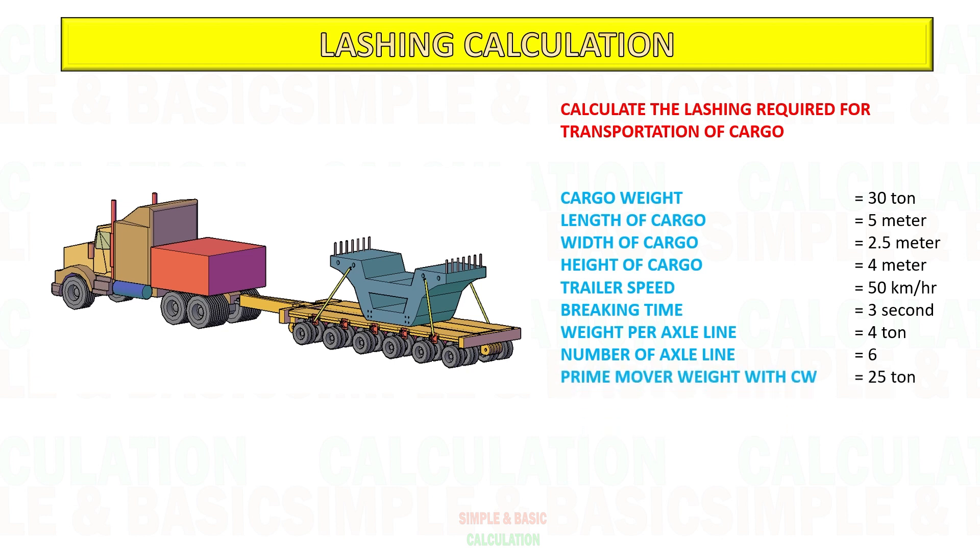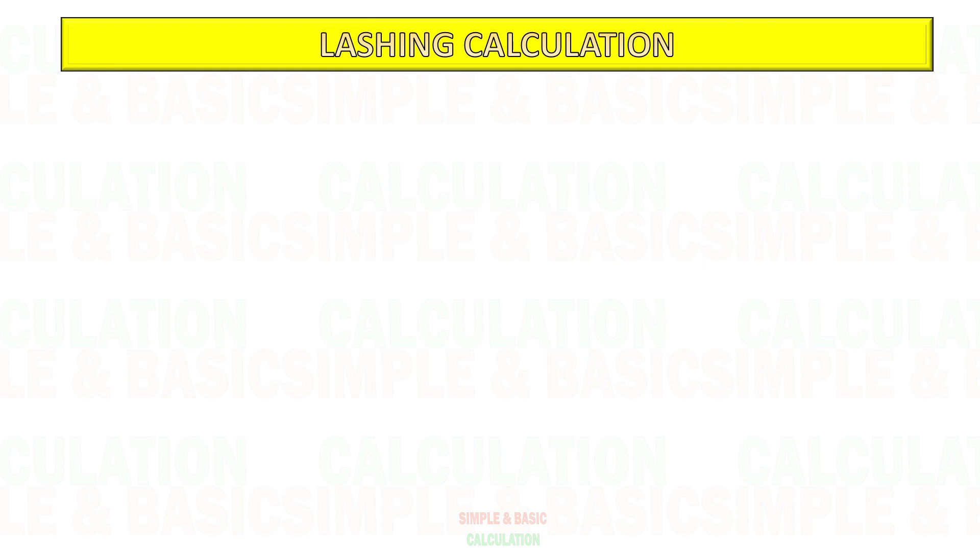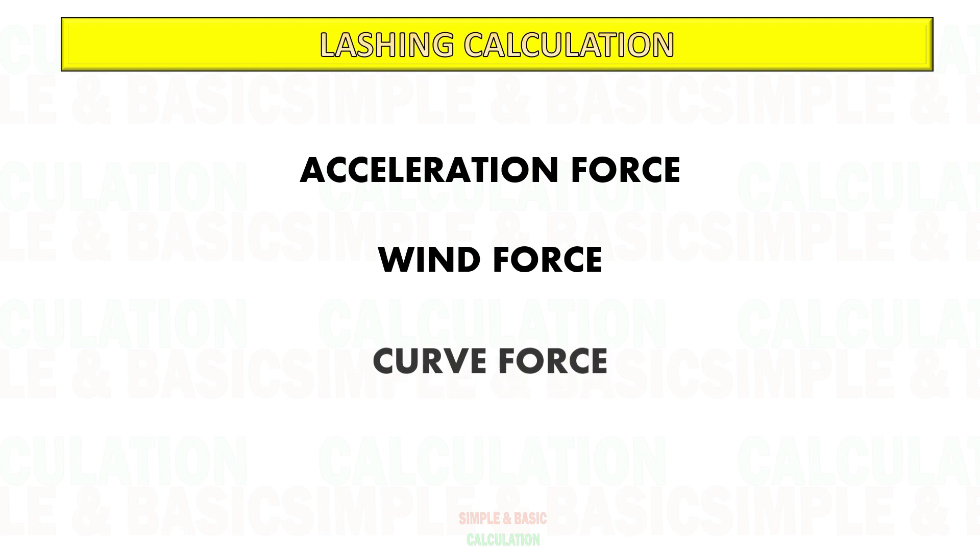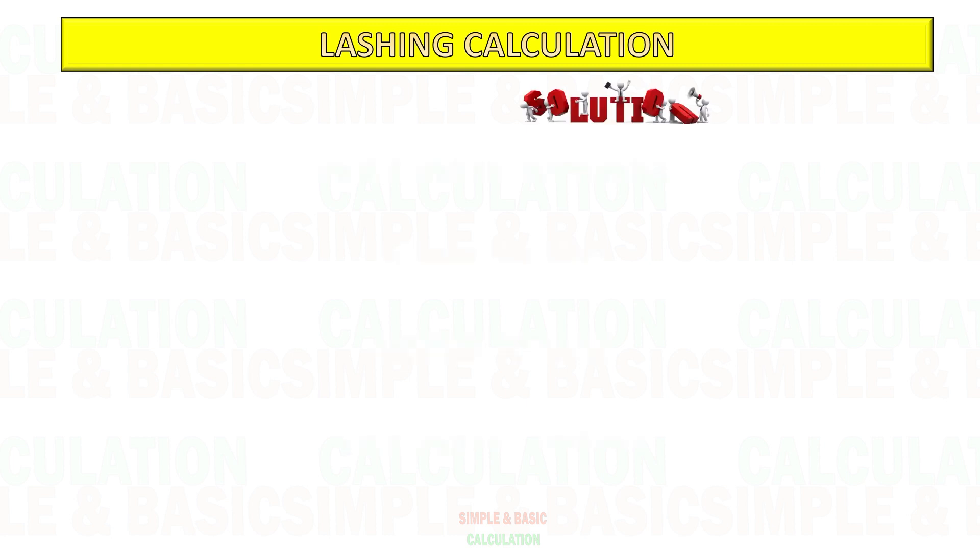To be able to calculate the required lashing, we need to find the forces acting on the cargo during transportation: acceleration force, wind force, curve force during turning, and gradient force or slope along the transportation route.